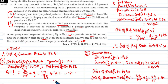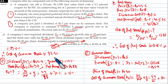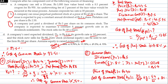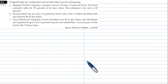Therefore, cost of new common stock — external equity — is 15 percent. Cost of common stock from retained earnings — internal equity — we computed as 21.5 percent. These are the component costs of capital. The overall or average cost of capital — weighted average cost of capital — will be covered next, as mentioned in section 6.5.